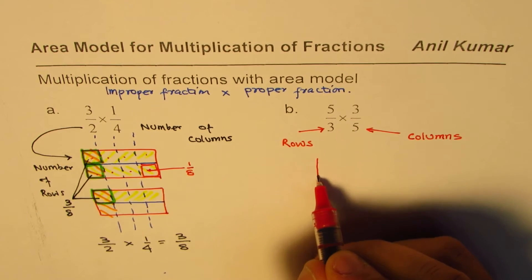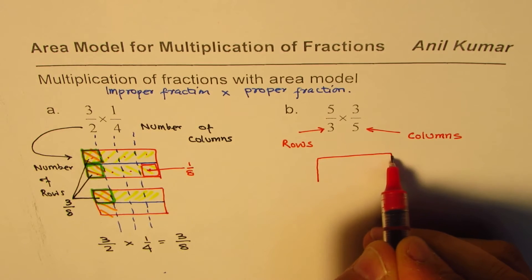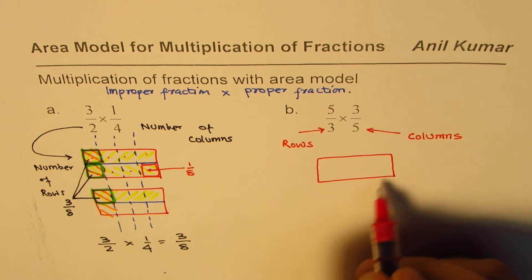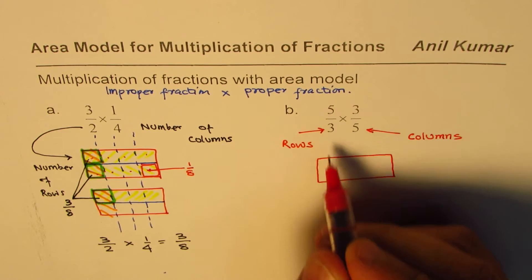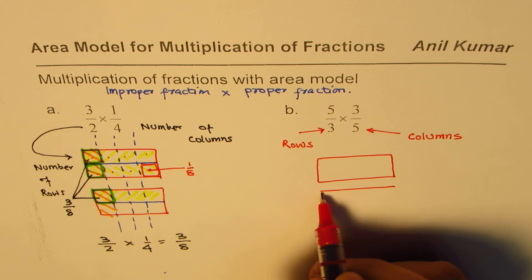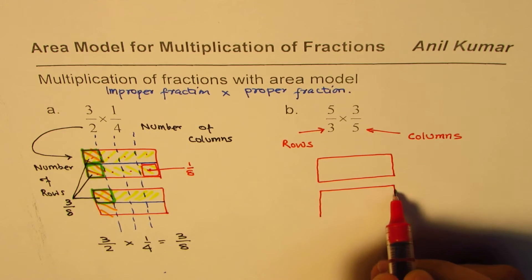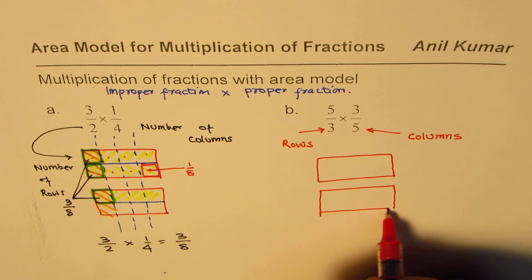Okay, so we make a rectangle, and since it is improper, we will have to make 2 rectangles. Only then you can get 5 one thirds. Is that okay? Right.